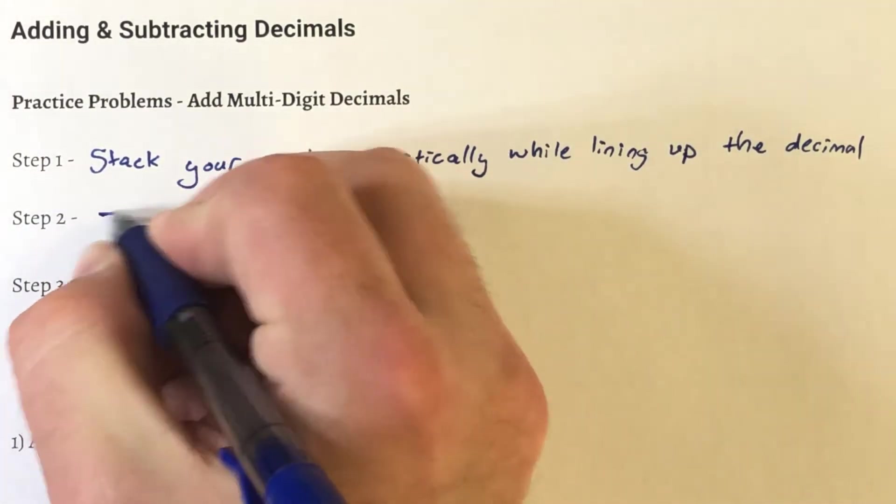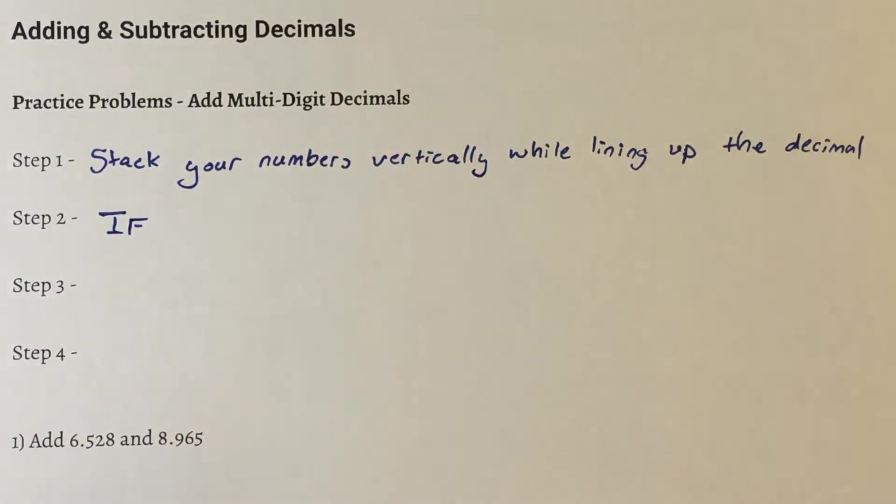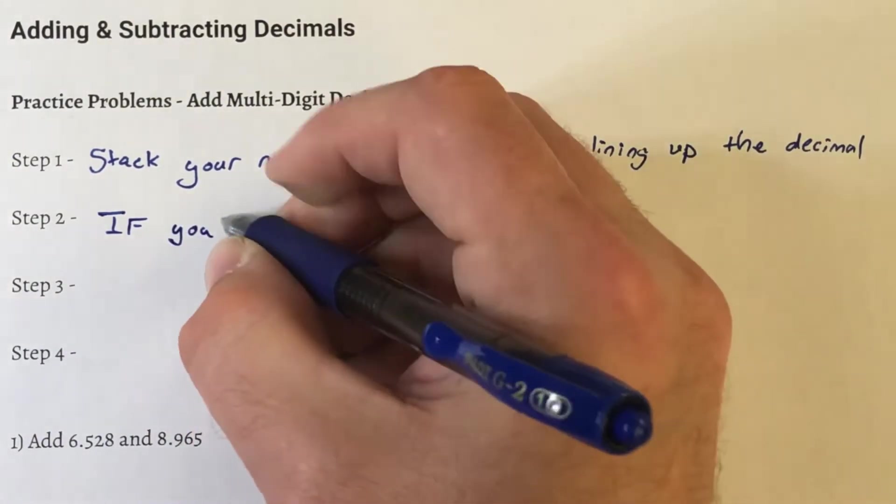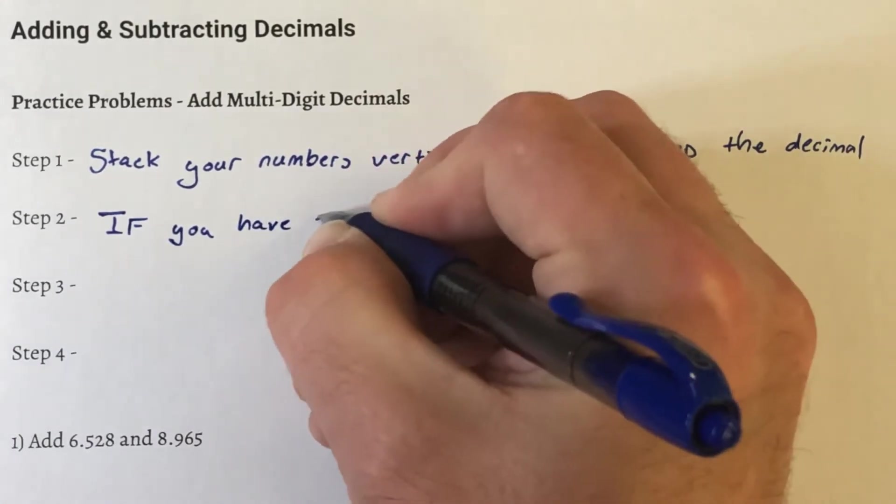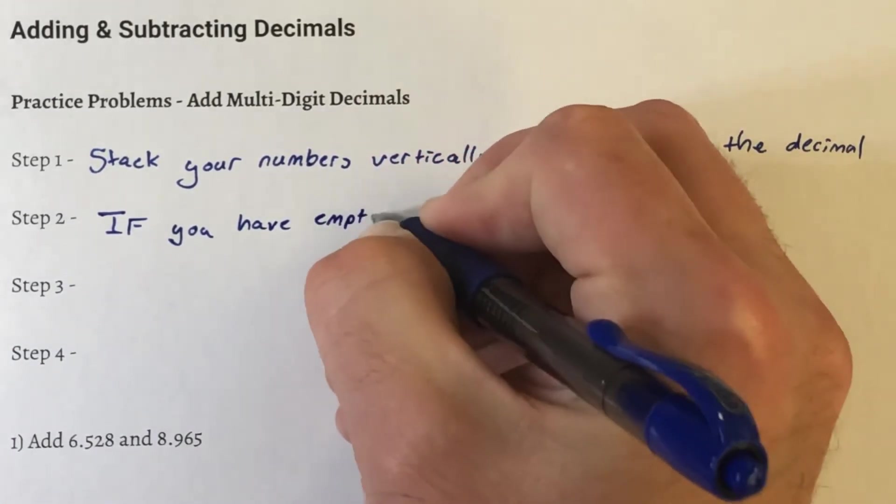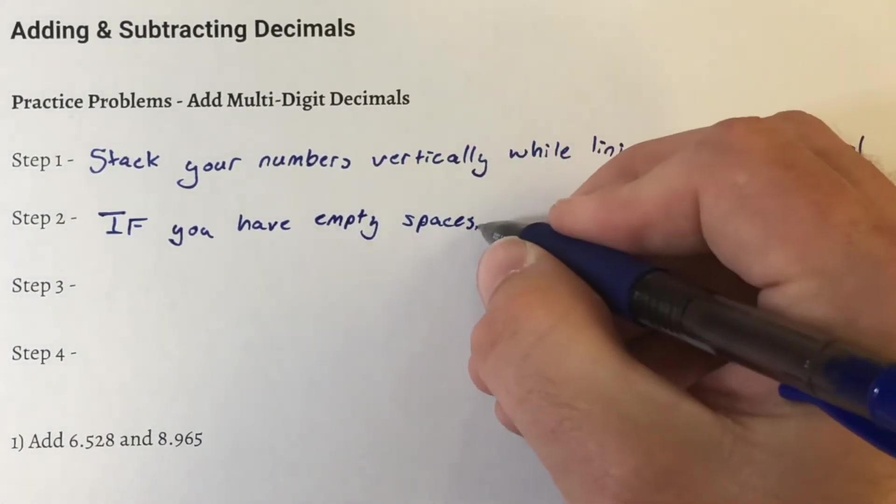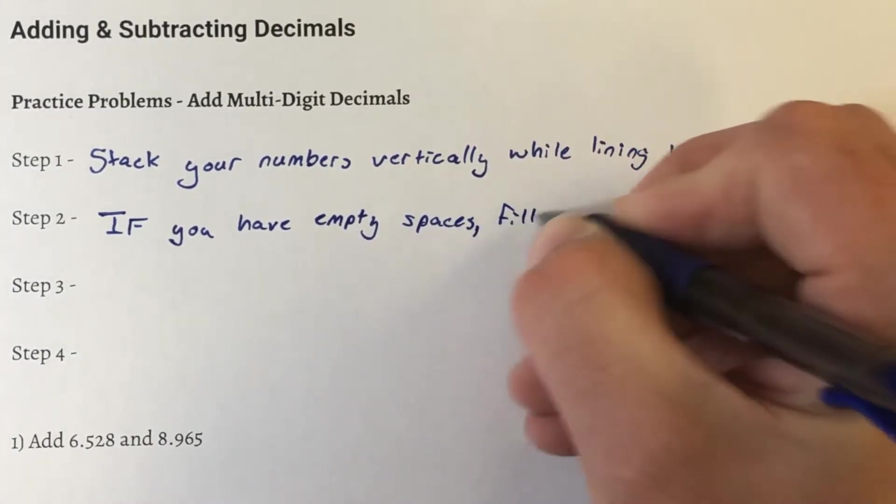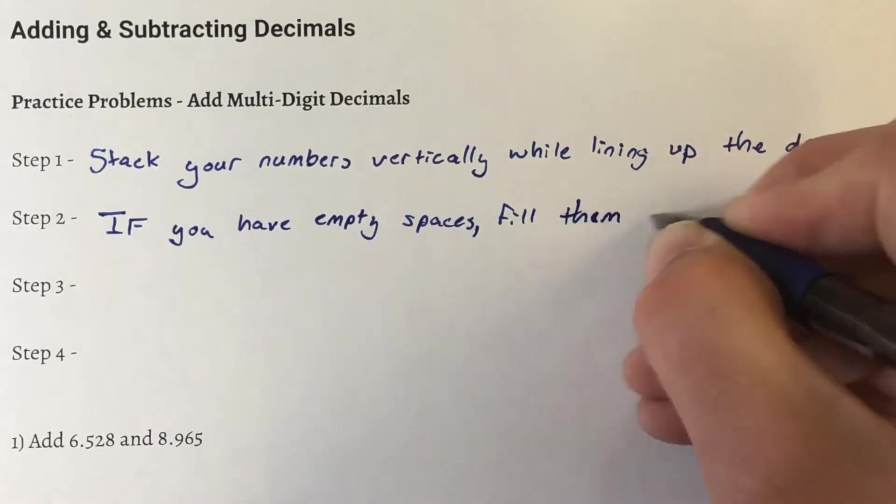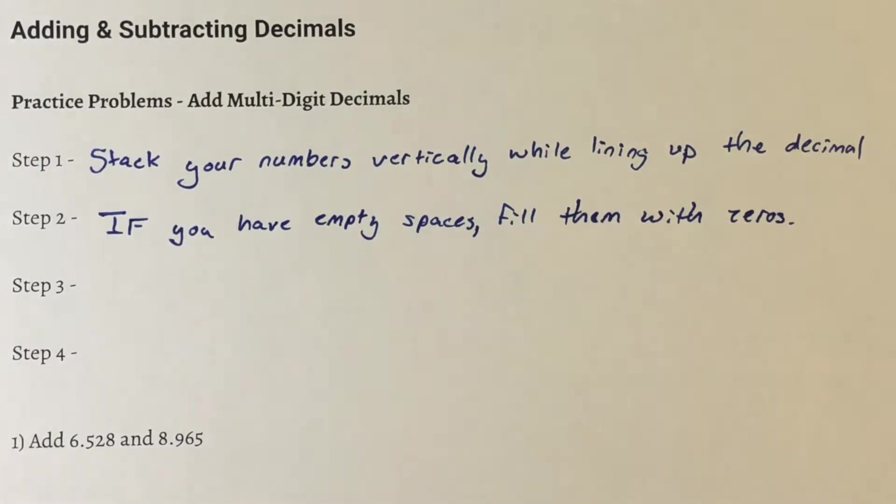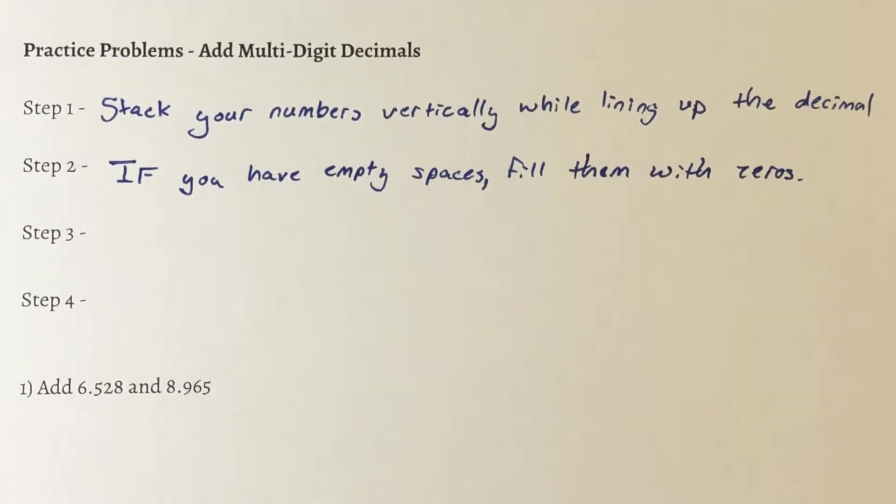The second step, if you have empty spaces, fill them with zeros. So whenever you stack your numbers, if you notice there's an empty spot and the numbers don't line up, fill it with a zero.